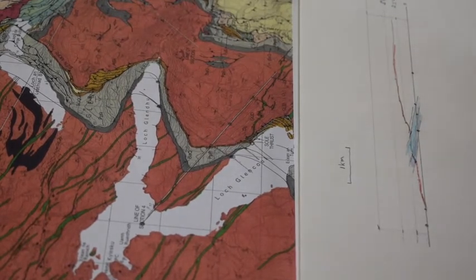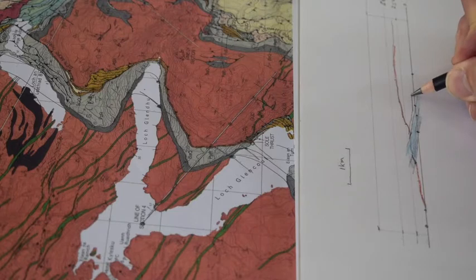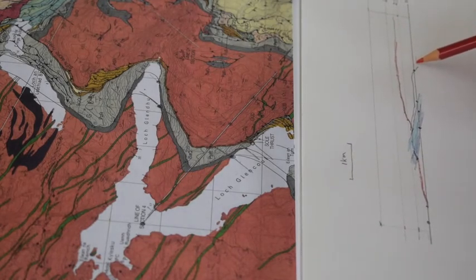So to complete the section, we just have to join that up. So we take our Glencool thrust. It doesn't go to sea level, so it just lies above sea level somehow, and then dives down into the subsurface. So let's colour this in.